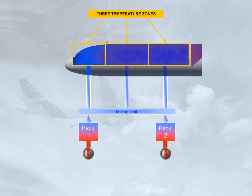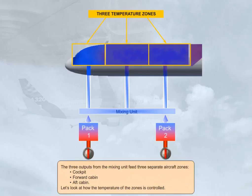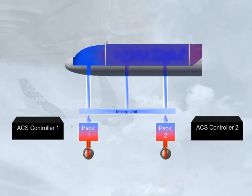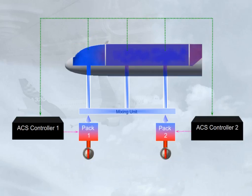The two ACS controllers monitor the temperatures of the three zones and send signals to set the air temperature delivered by the related pack. Each ACS controller comprises two lanes, one active and the other in standby. In case of one lane failure, the second lane takes over. In case of both lanes failure, the related pack is lost.